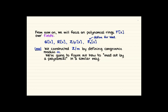We constructed Z mod m by defining congruence mod m. Now inside our polynomial rings we're going to figure out how to mod out by a polynomial in a similar way, so we're going to do arithmetic mod a polynomial.